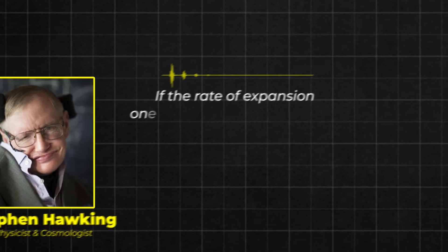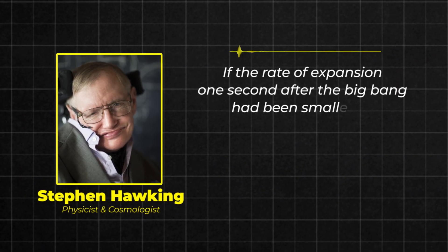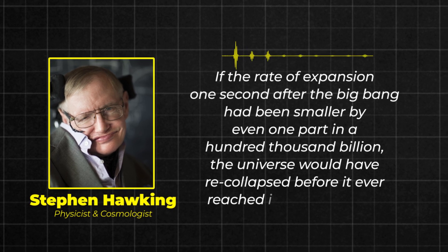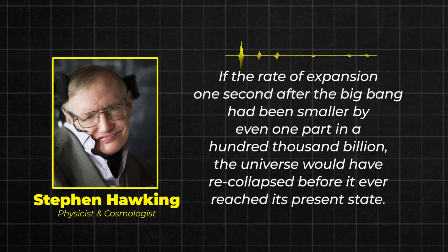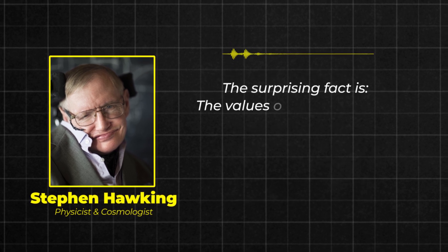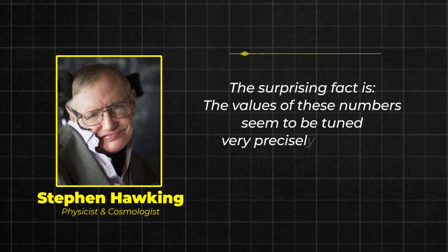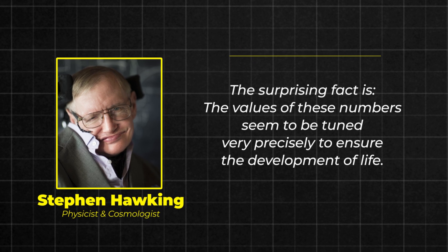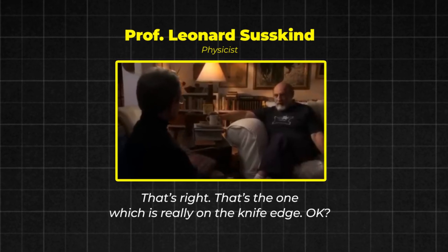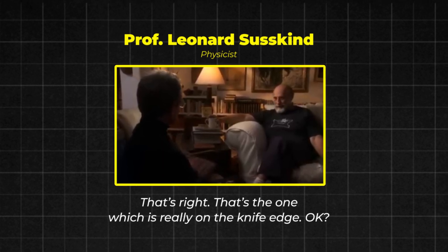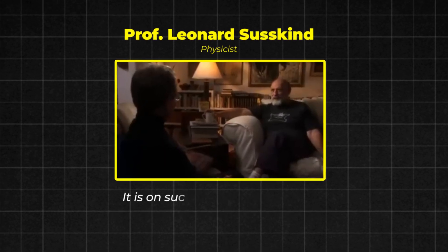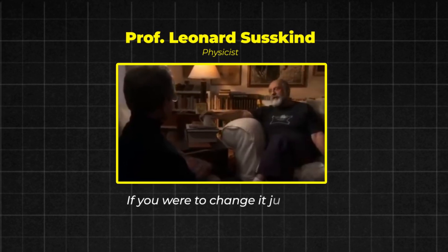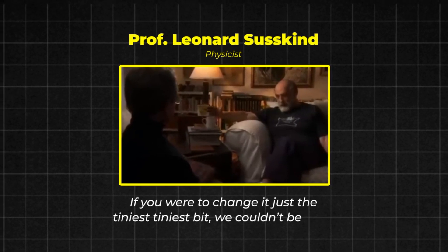If the rate of expansion, one second after the Big Bang had been smaller, by even one part in a hundred thousand billion, the universe would have re-collapsed before it ever reached its present state. The surprising fact is, the values of these numbers seem to be tuned very precisely to ensure the development of life. That's right. That's the one which is really on a knife edge. It is on such a narrow knife edge that it's almost inconceivable if you were to change it just the tiniest, tiniest bit, we couldn't be here.